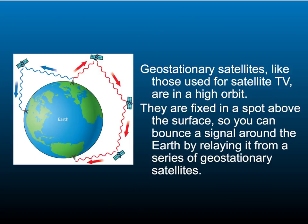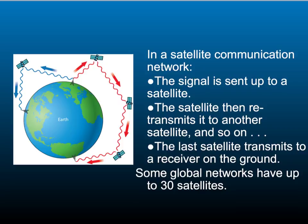Satellites that transmit satellite TV signals are in geostationary orbit. They beam the signal from a height of over 30,000 kilometres from the Earth's surface. They are in a fixed spot above the surface, so you can bounce the signal around the Earth by relaying it from one satellite to the next. In a satellite communication network, the signal is beamed up to a satellite, and then that satellite retransmits to the next one and so on. Then the last satellite transmits to a receiver on the ground. Some networks can have up to 30 satellites to relay the signal.